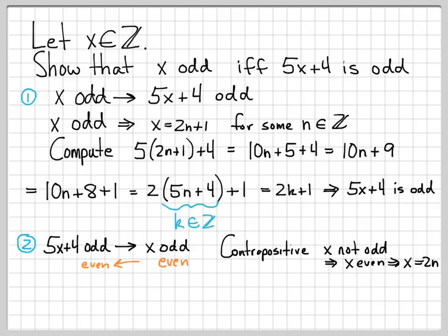What does it mean for x to be even? That means I can write x as 2n for some n in Z. Now we can do a computation. I'm assuming that x is even, and I want to show that 5x plus 4 is even. I compute 5x plus 4, which is 5 times 2n plus 4.